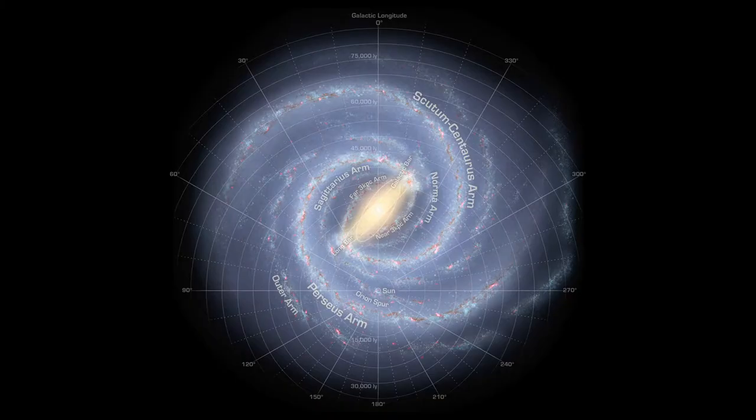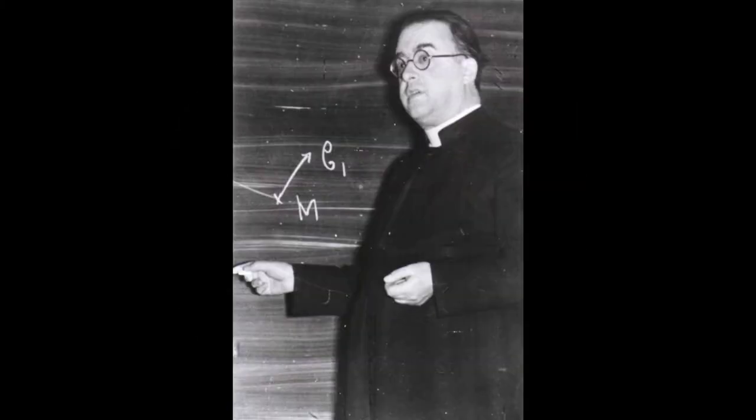In 1927, Georges Lemaitre, who is a physicist and a Roman Catholic priest, thought that maybe the recession of these galaxies was due to the expansion of our universe.